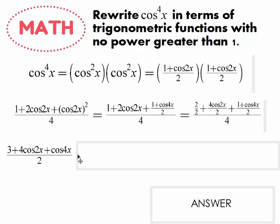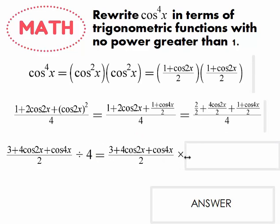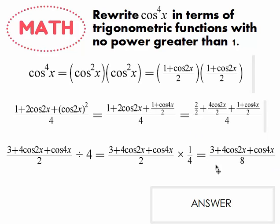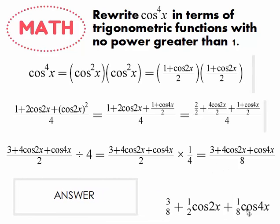Now we deal with the denominator. Instead of writing it as a fraction over a fraction, I write it as division by four and then use keep, change, flip: keep the first piece, change division to multiplication, and flip four to one-fourth. Two times four gives eight, and the numerator doesn't change. The final answer — which may vary by textbook — breaks into three separate pieces: three-eighths, plus one-half cosine 2x, plus one-eighth cosine 4x. It's a really long answer for what started as a simple-looking problem.